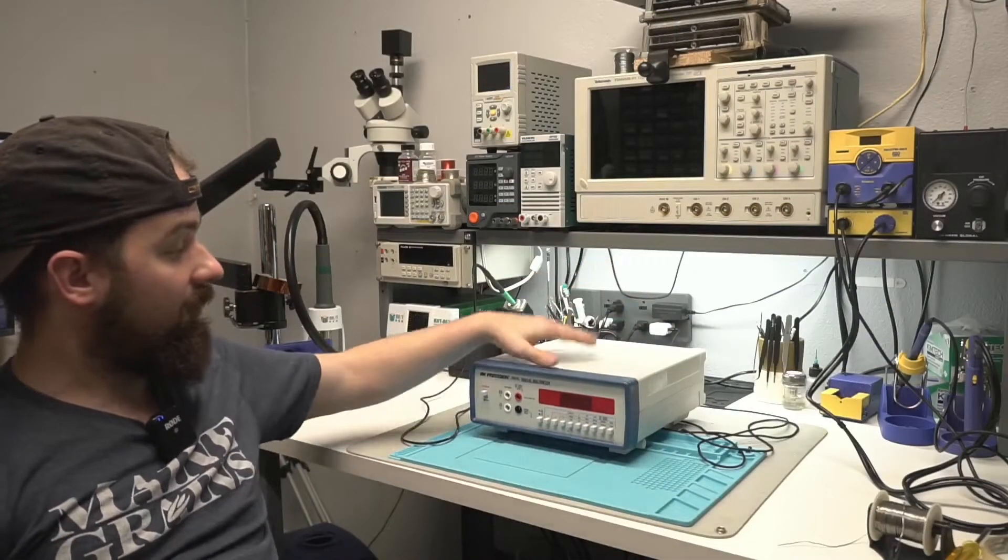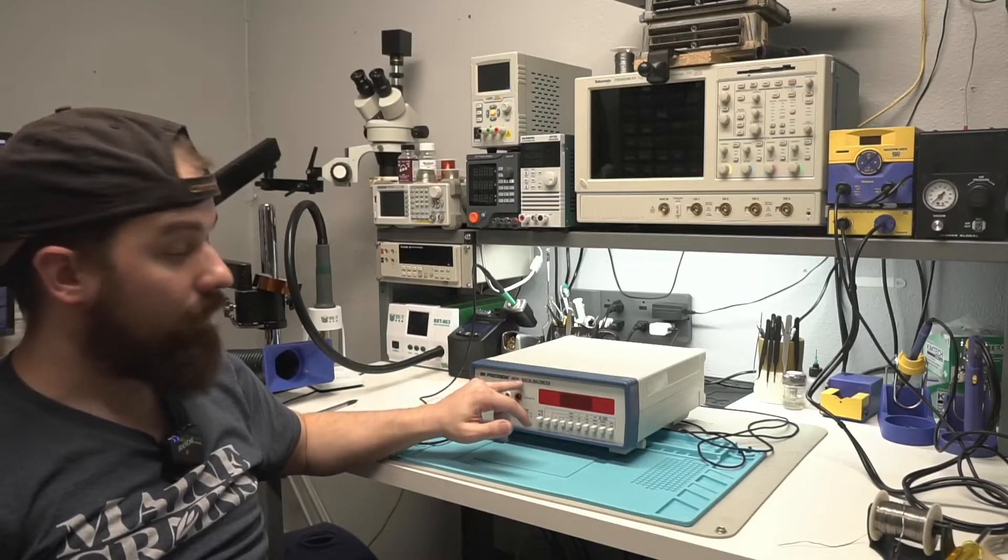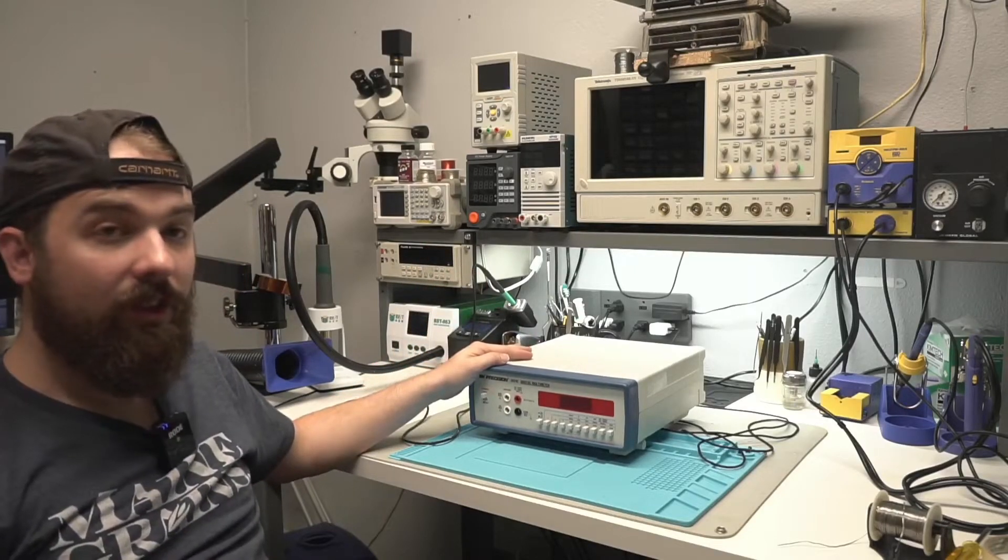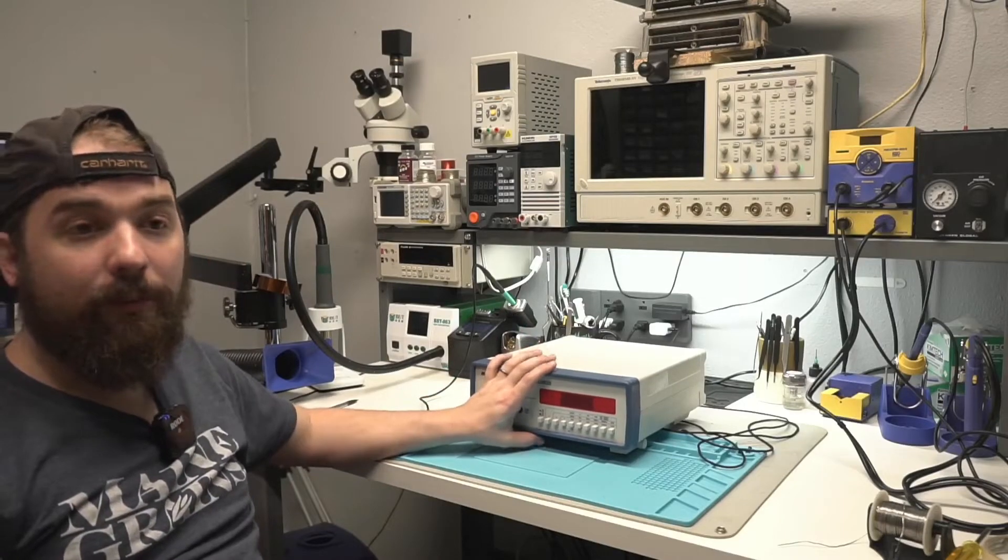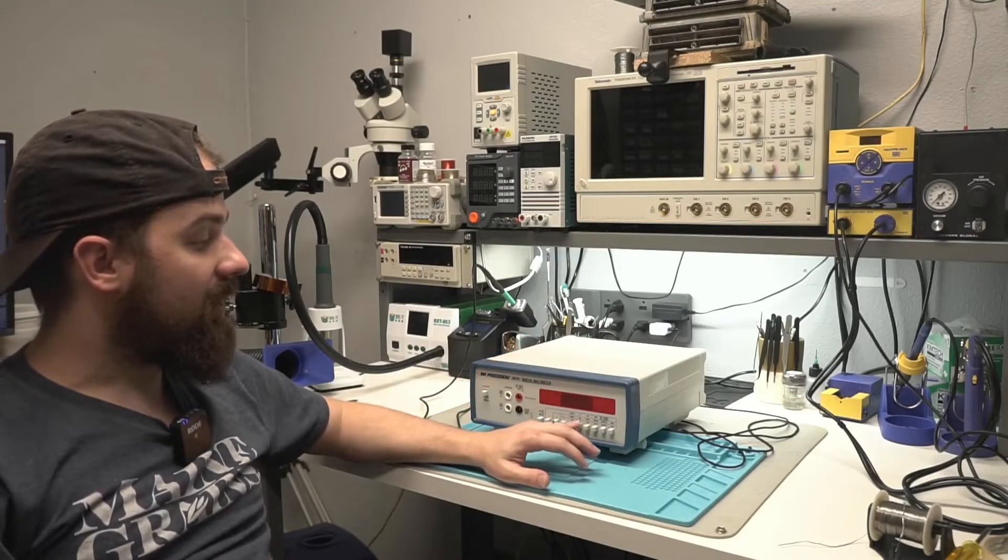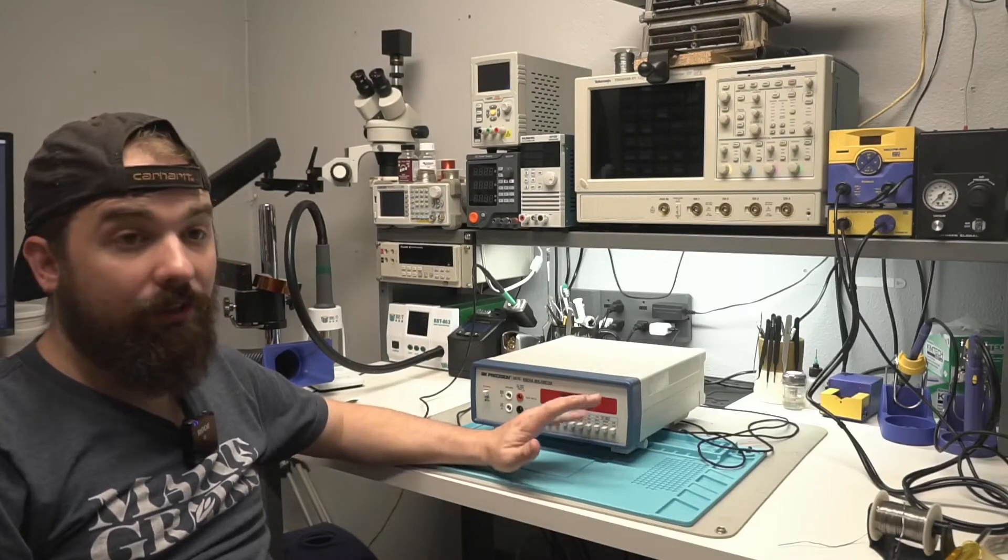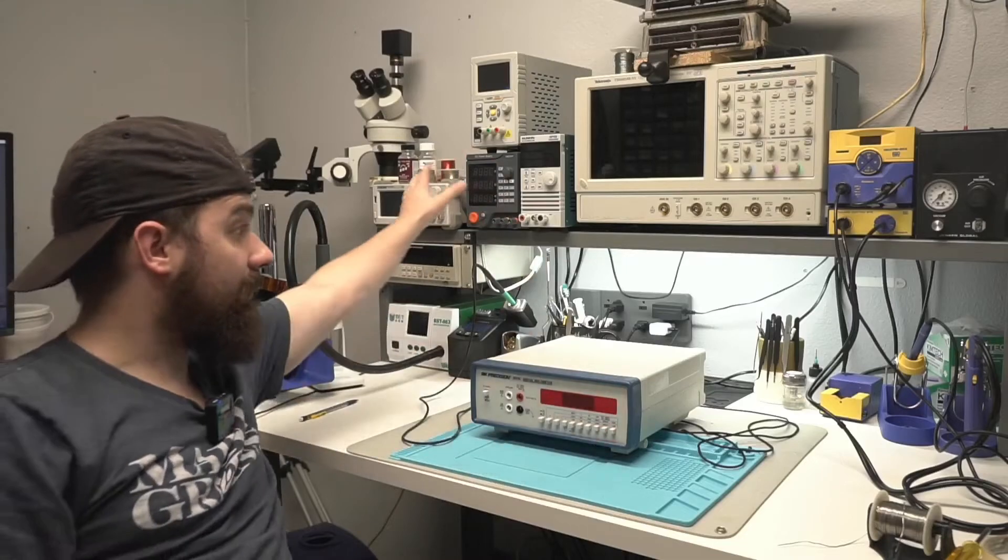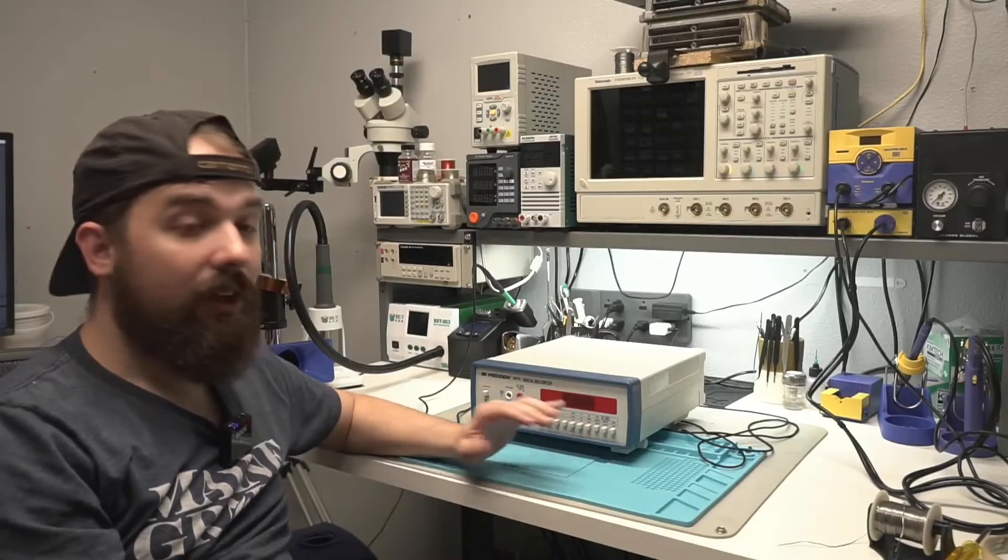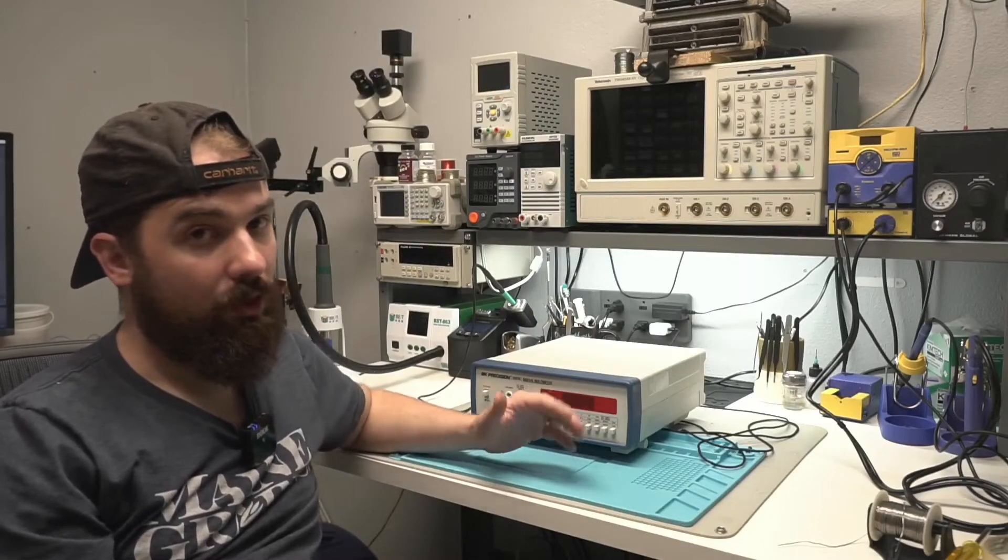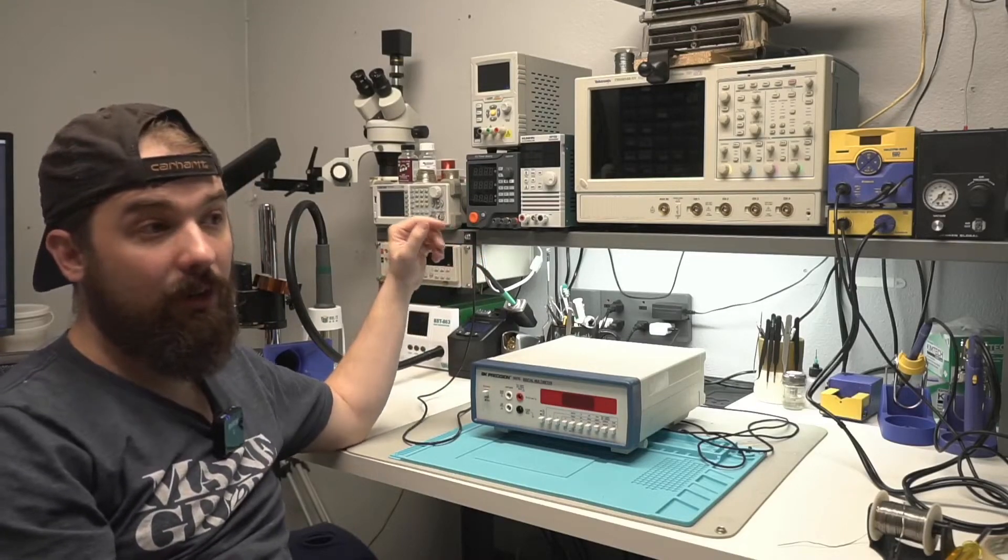Okay, so this is the multimeter that I replaced. So it was a BK Precision 2831C and it is a great multimeter. Didn't have any problems with it at all. Main drawback for me with it that made me want to upgrade is it's not auto ranging. So I'd always have to change the range scale on it, which can be difficult to do while I'm recording videos. But I also really wanted something that I could show on screen for you guys.